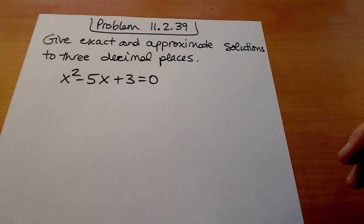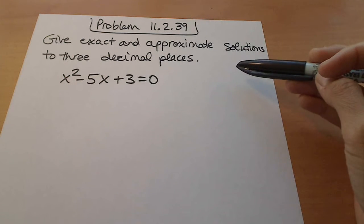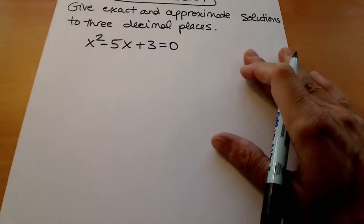So this is problem 11.2.39 and they ask us to give exact and approximate solutions to three decimal places. We're going to be using the quadratic formula in order to do this.